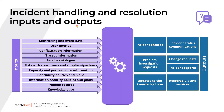In the incident handling and resolution process, the inputs are: monitoring and event data, user queries, configuration information, IT asset information, service catalog, communications with consumers and suppliers or partners, capacity and performance information, continuity policies and plans, information security policies and plans, problem records, and the knowledge base. Some inputs are intuitive, but others may require additional understanding or memorization, as exam questions are likely to ask which of the listed items is an input to this process.